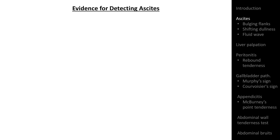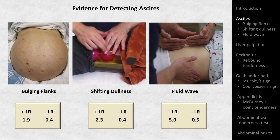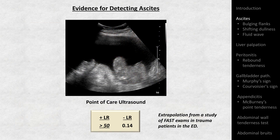Regarding the evidence for these three findings, bulging flanks and shifting dullness have mildly helpful positive and negative likelihood ratios for detecting ascites, while the positive likelihood ratio for detecting a fluid wave is moderately helpful. The assessment of possible ascites is one of the specific situations in which point-of-care ultrasound, if available, far exceeds the diagnostic capabilities of the physical exam.